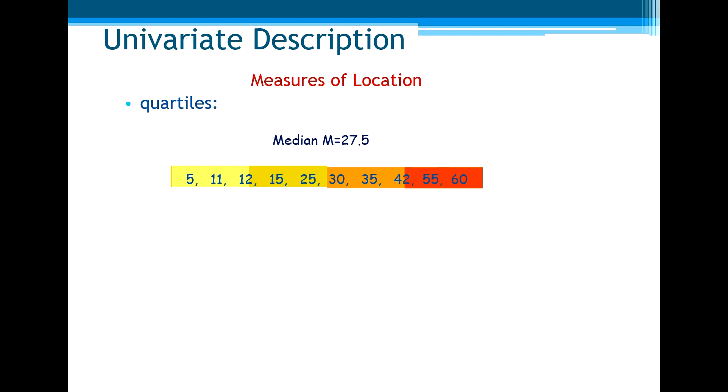There are several methods to calculate the quartiles for our discrete set of data. But we can say that the first quartile is the median of the first half, and the third quartile is the median of the second half.